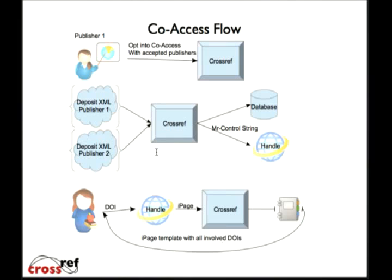This is the way that the CoAccess workflow will be happening. Essentially, you opt in and say you want these publishers to allow you to do the deposits, and then you simply deposit your XML as you would any other time. The only thing you have to be careful of is to have matching ISSNs and ISBNs — they don't all have to match, just at least one or two of the groups. CrossRef then takes your information, merges it, puts it into the database, and updates the handle. The XML of your deposit is not manipulated in any way in reference to CoAccess — the only thing that is actually changed is what goes into the handle. So when you retrieve the metadata for your particular DOI, it will look exactly the way you expected, with no other folks' information.